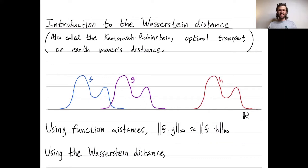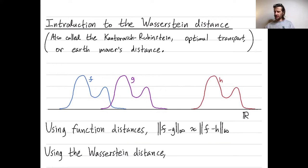We'd like to have, however, some notion of in what sense g is closer to f than h is to f. If you sort of allow yourself to translate the function horizontally, you can get from f to g much more quickly than you can get from f to h. And that's what the Wasserstein distance will rigorously encode for us.